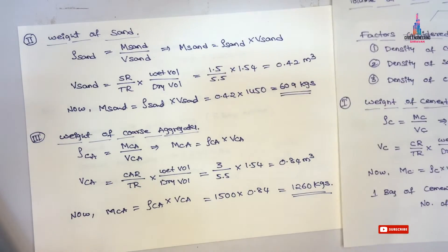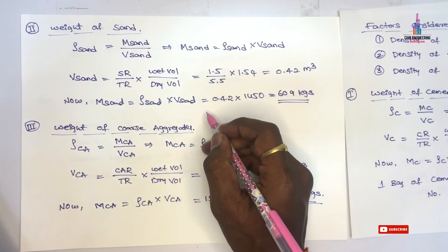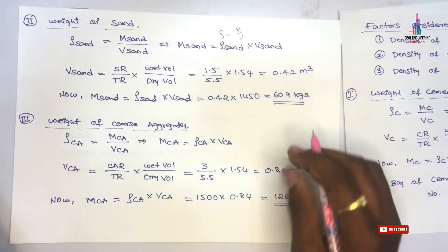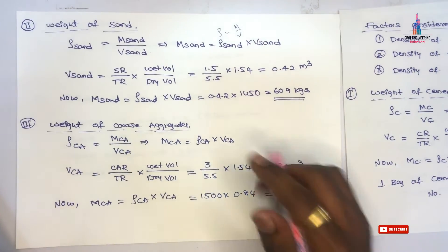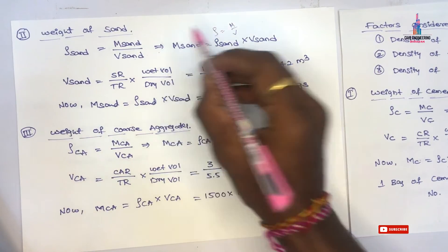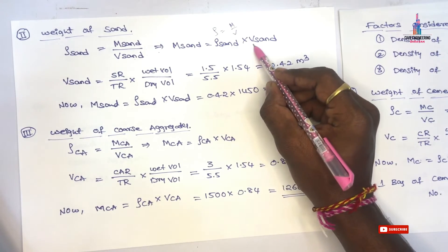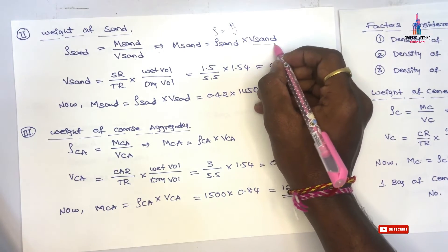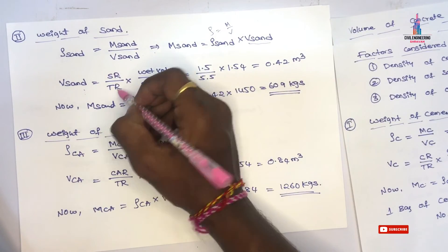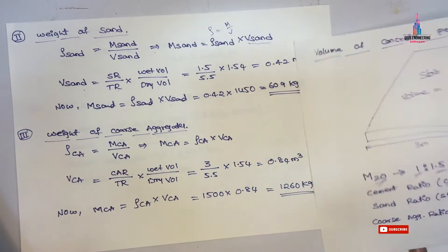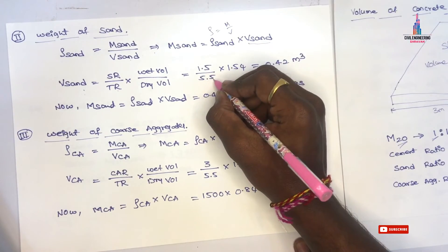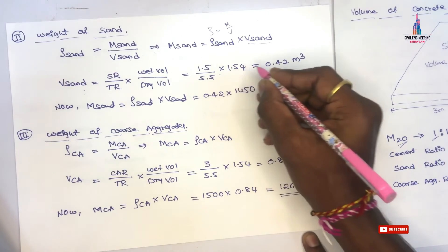Now I will explain how to calculate the weight of fine aggregates, i.e., sand. Using the same density formula, mass of sand equals density of sand multiplied by volume of sand. The volume of sand equals sand ratio divided by total ratio, multiplied by the wet-to-dry volume factor. From M20 grade concrete, the sand ratio is 1.5, so volume of sand equals 1.5 divided by 5.5 multiplied by 1.54.